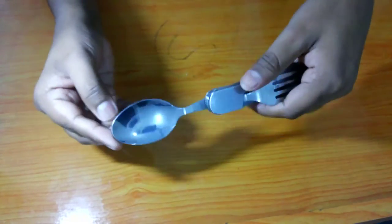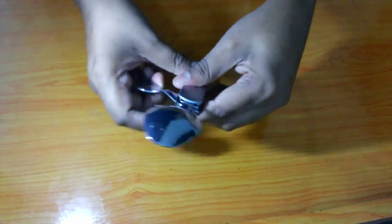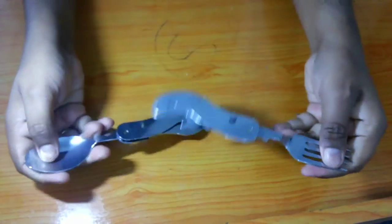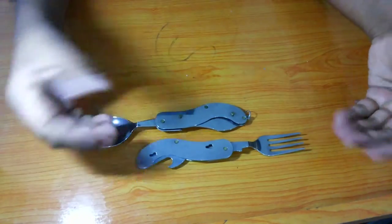First, it's got a spoon. It's got a fork. Now, how will you use it? It's very easy. You can use them separately.